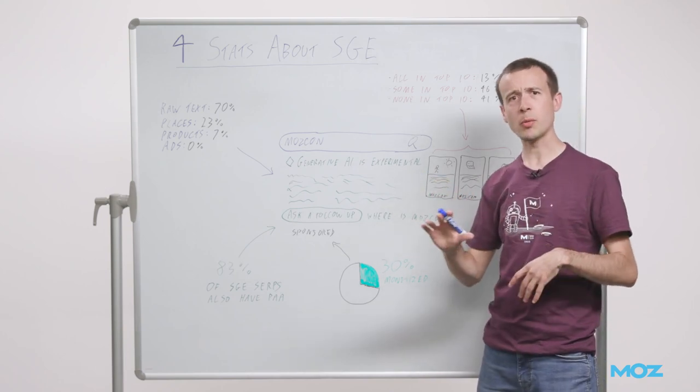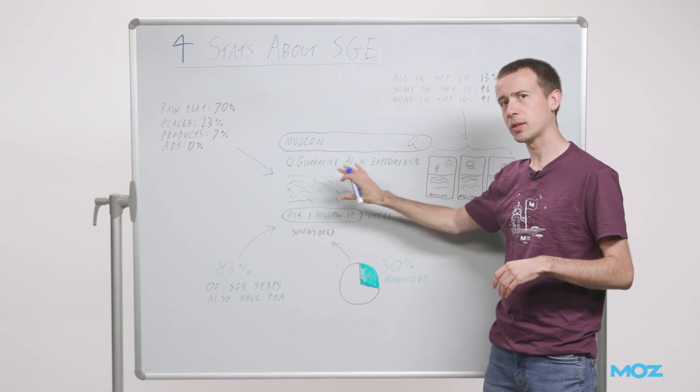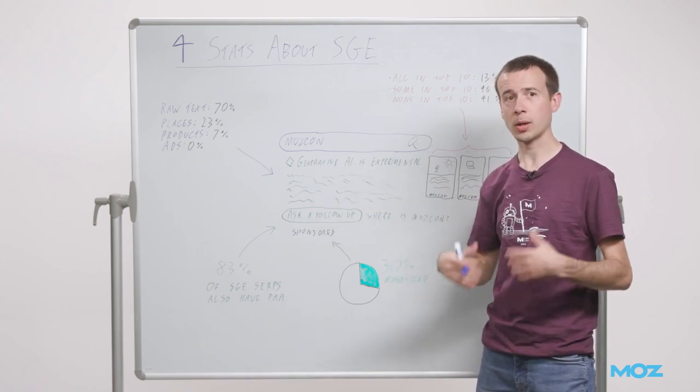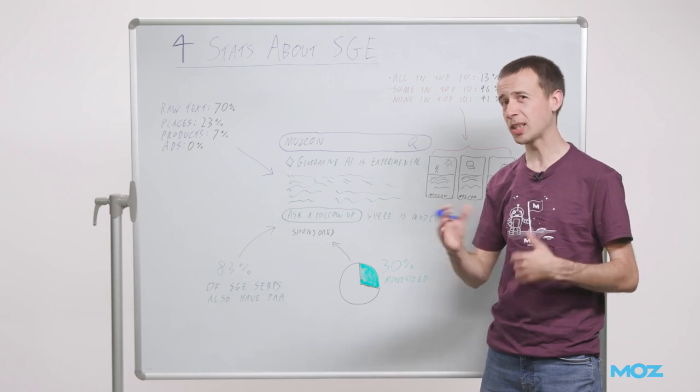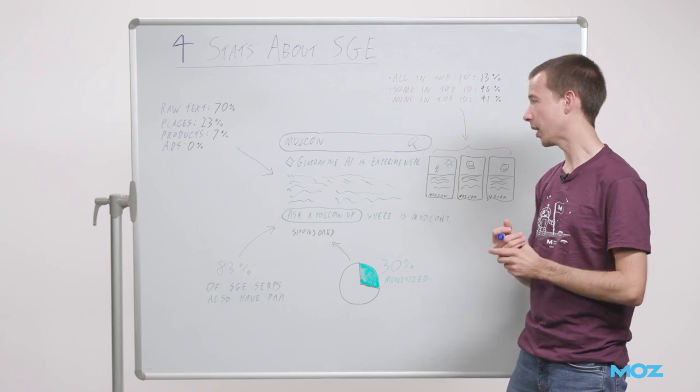Then in 7% of cases, you can get products inside here. I did not see - when they first demoed this at Google I/O, they had ads inside the AI-generated block. I've never seen that in the wild. I'm not sure they actually have that functionality. It was probably just a mock-up or something like that, but maybe a statement of intent.